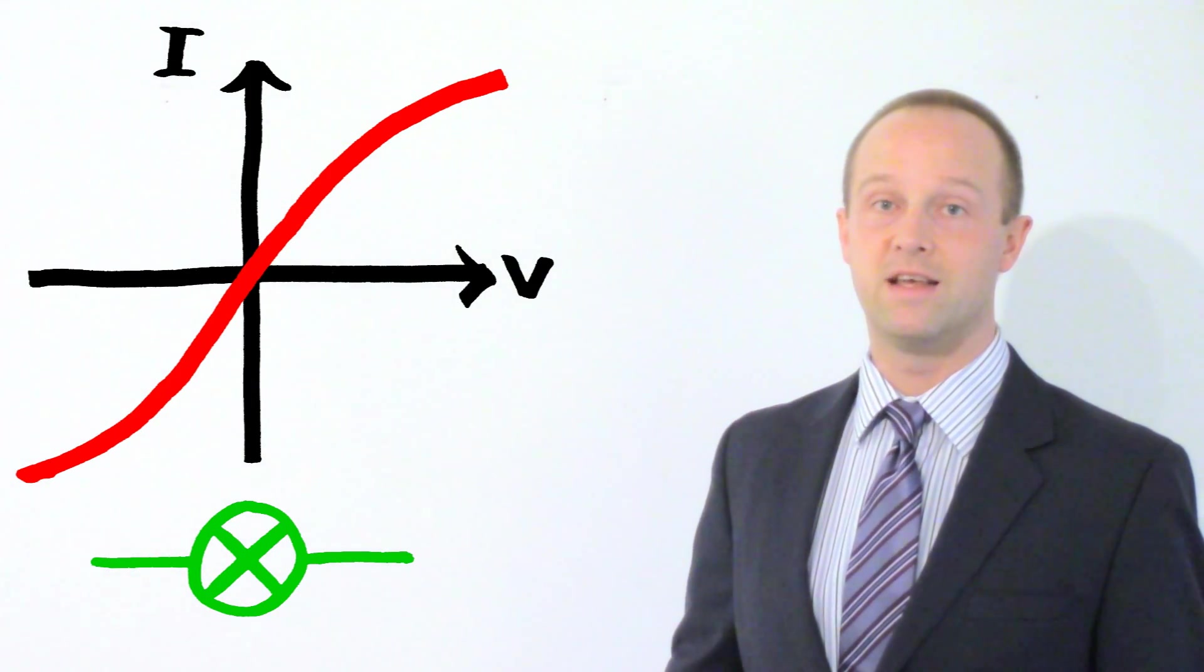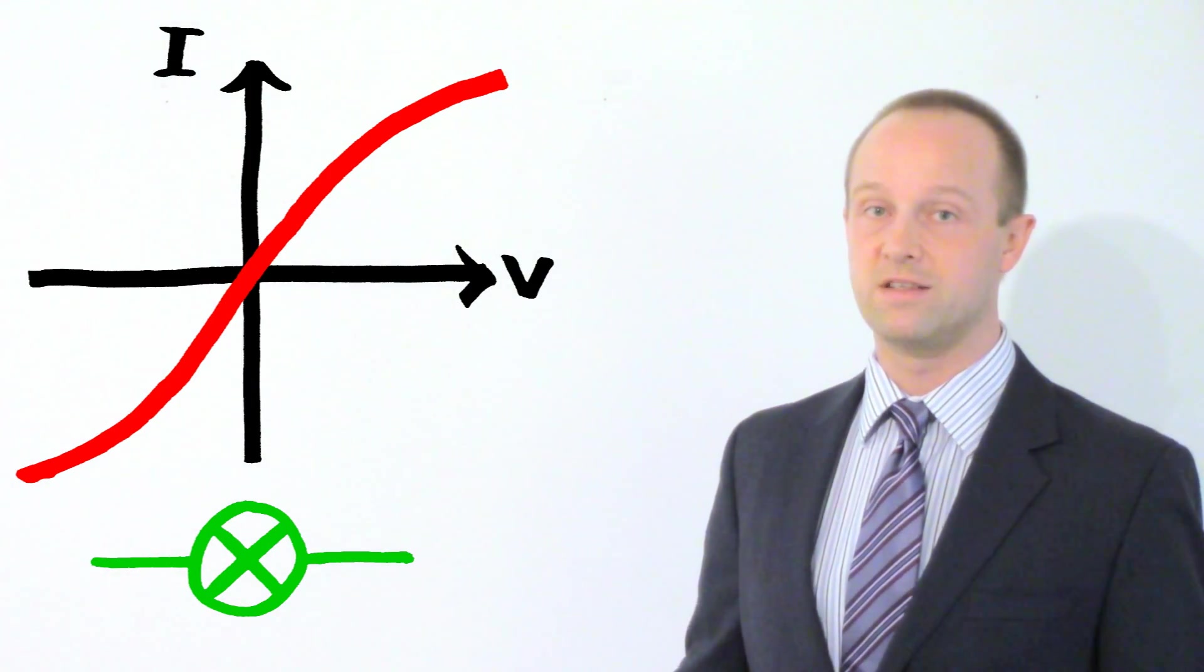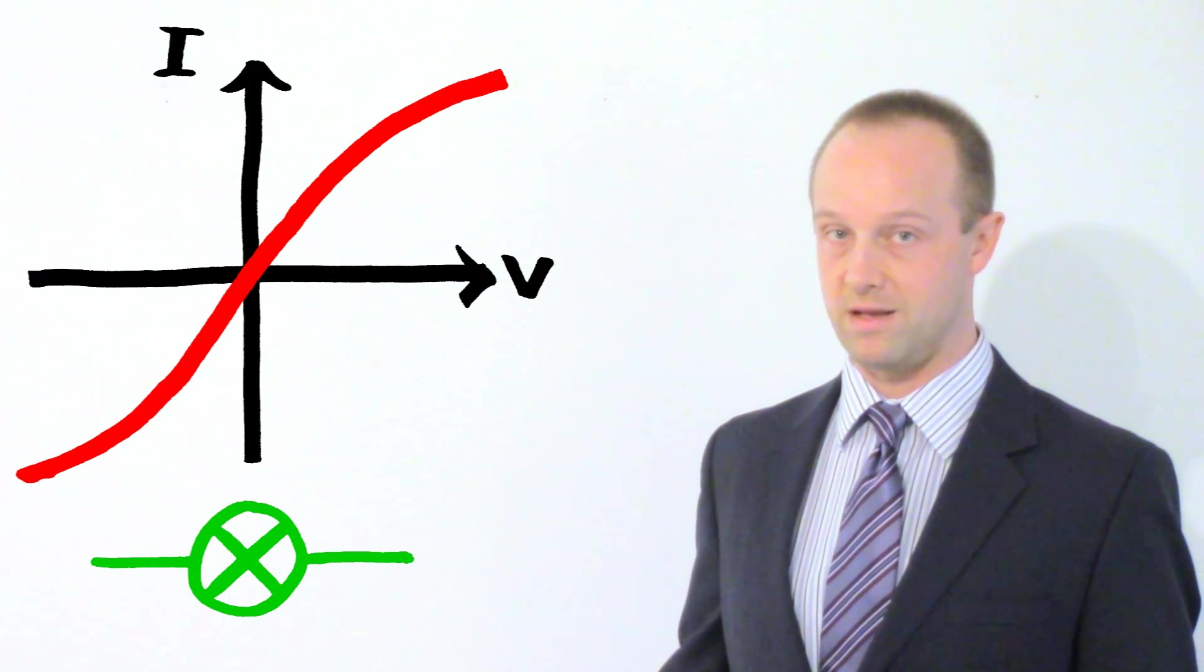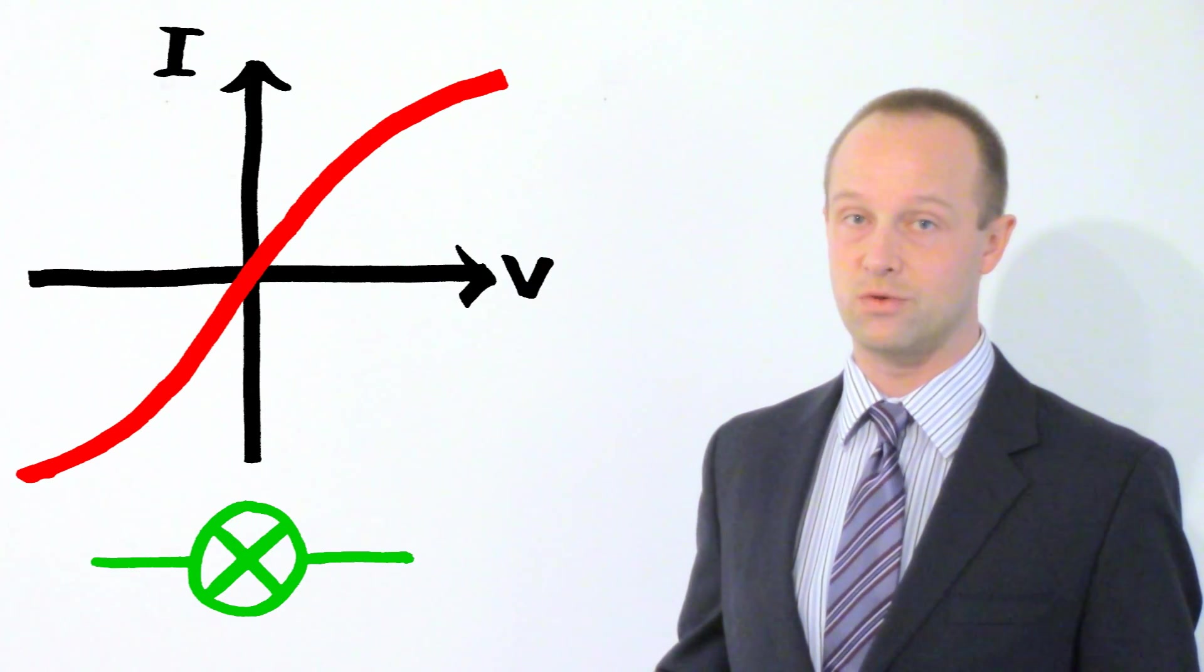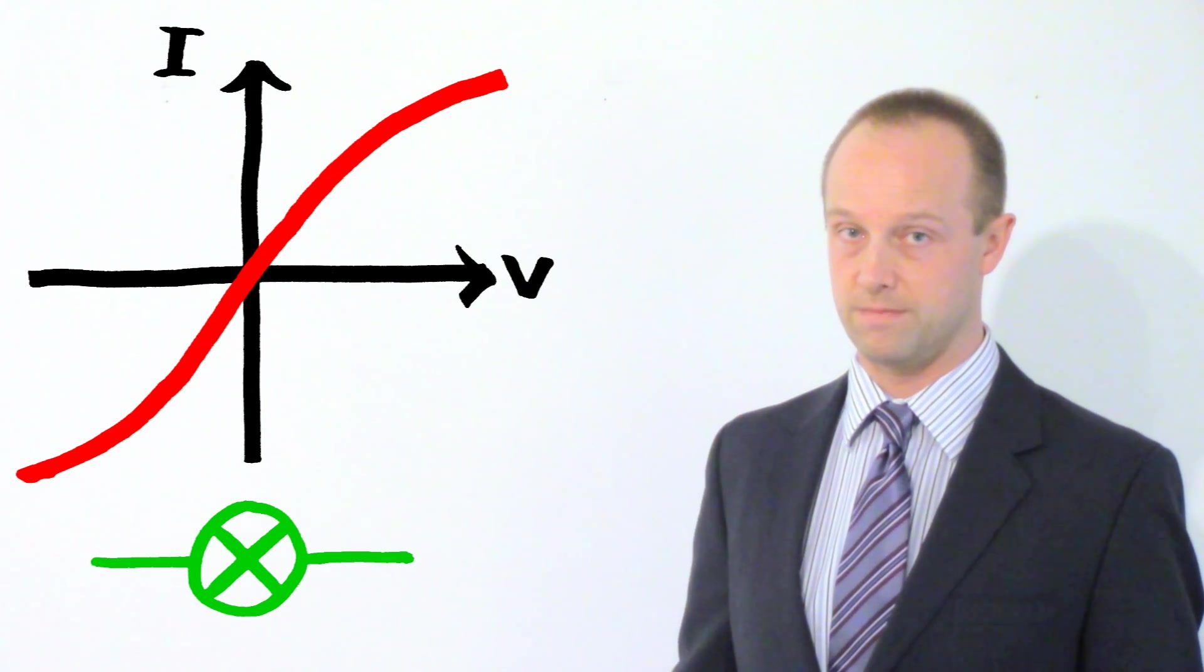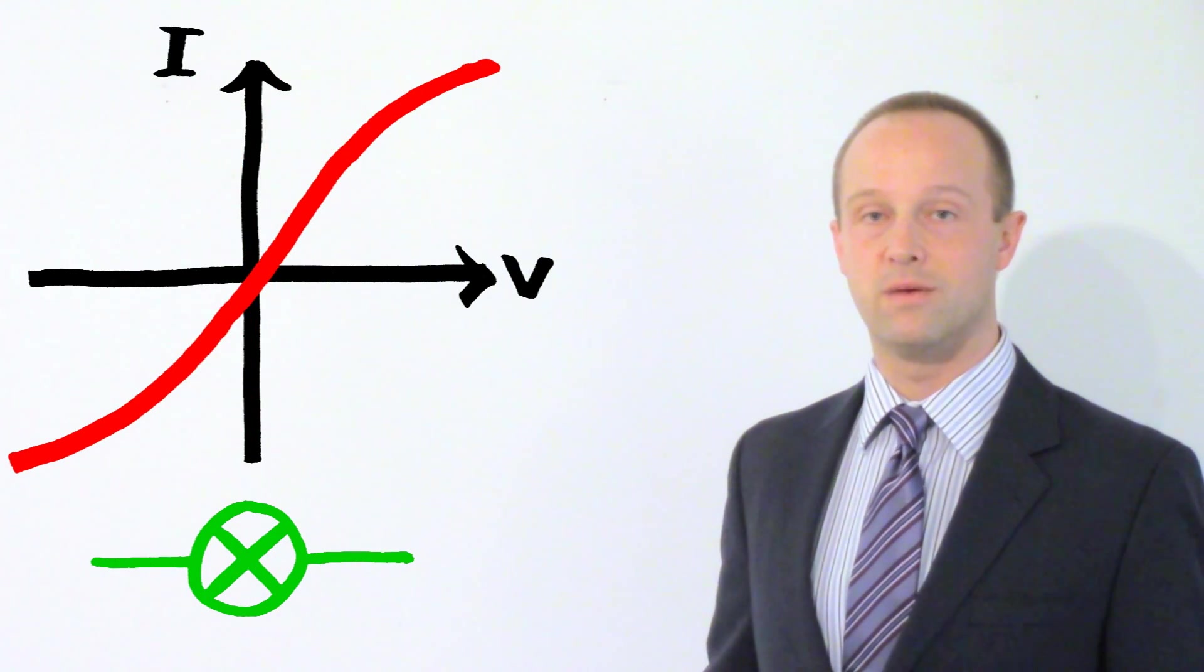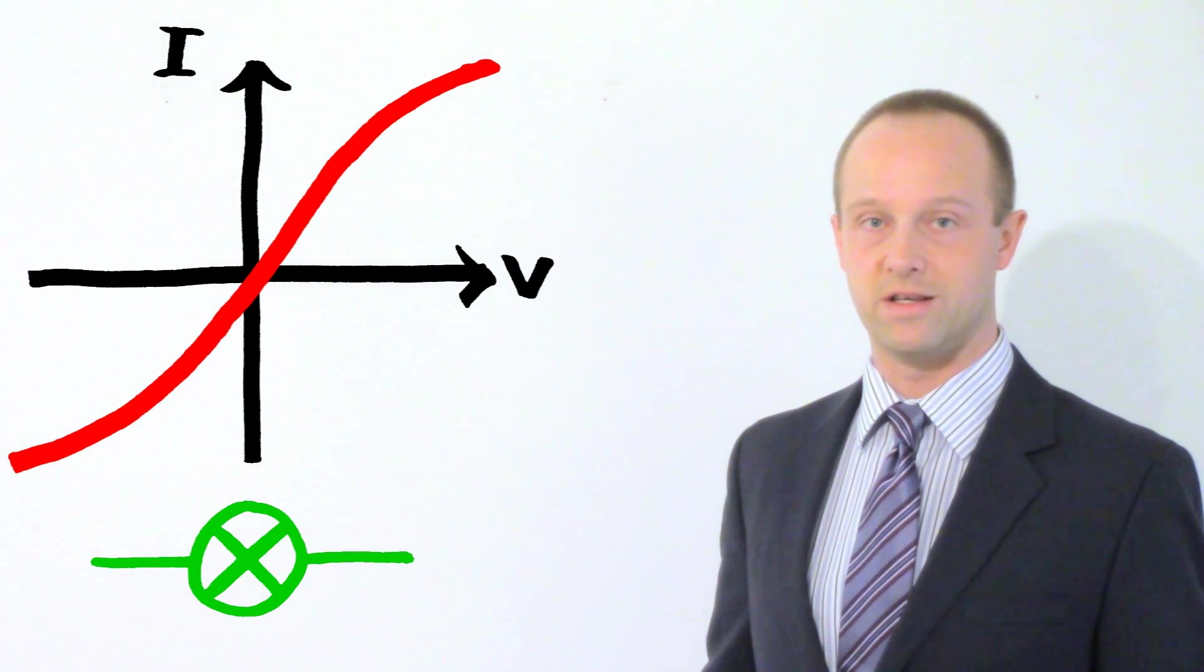But at higher temperatures, its resistance increases, and so doubling the potential difference doesn't double the voltage anymore, because that resistance has increased so not as much current can get through. And it's got rotational symmetry, which means that it works exactly the same if you plug it into the circuit back to front.